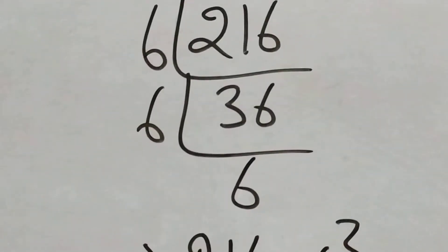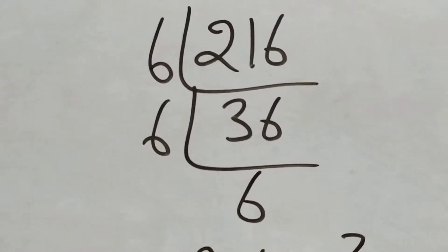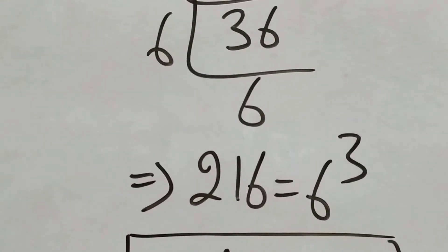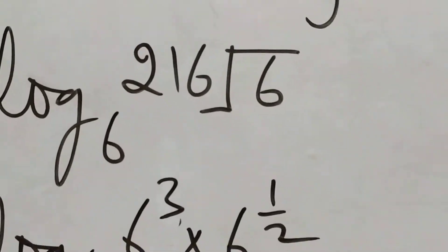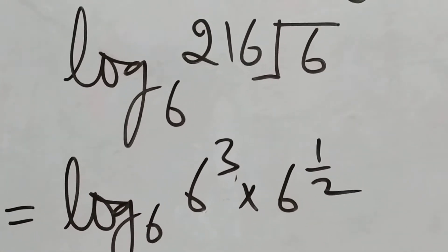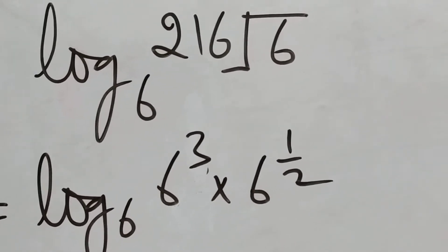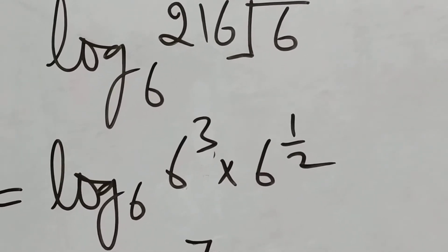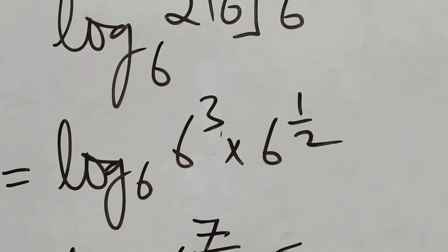So calculate the figure containing 6. Factorize 216 like this: 216 equals 6 cubed. So just write down or replace 216 by 6 cubed and root 6 by 6 to the power 1 by 2.